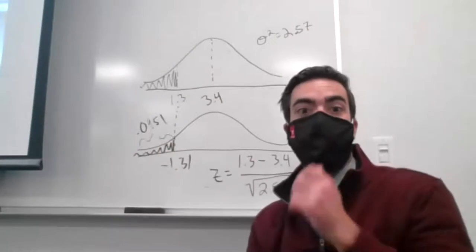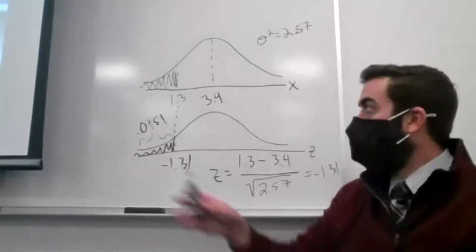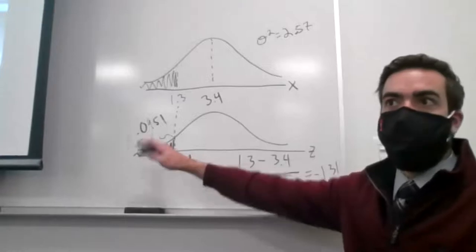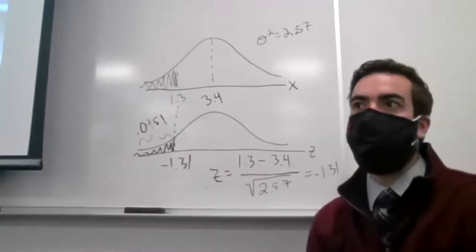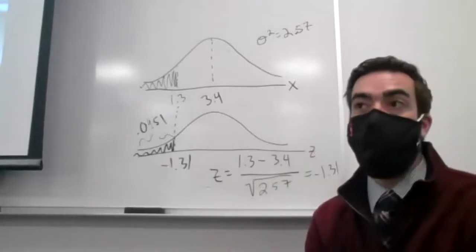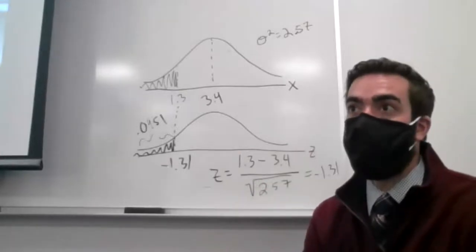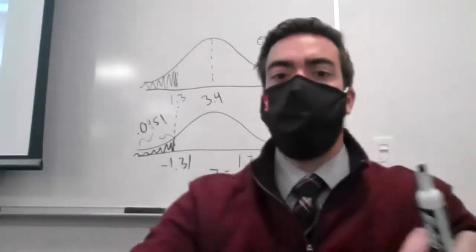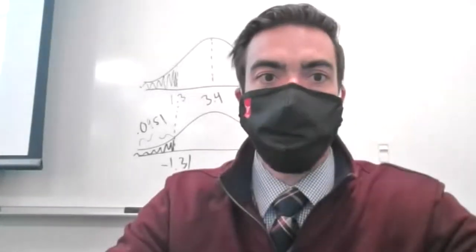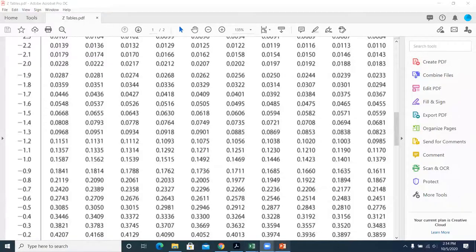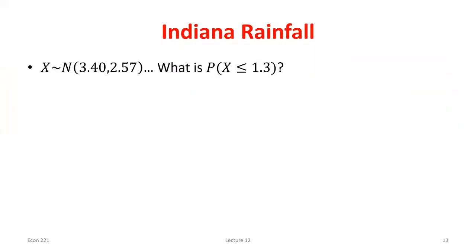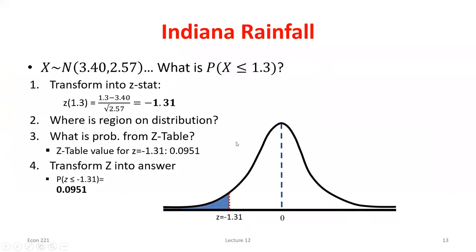The probability we got from the table is exactly what we wanted, so there's really no final transformation step here. We already have the answer: find the z-score, look it up, find the probability, no transformation needed — we're done.